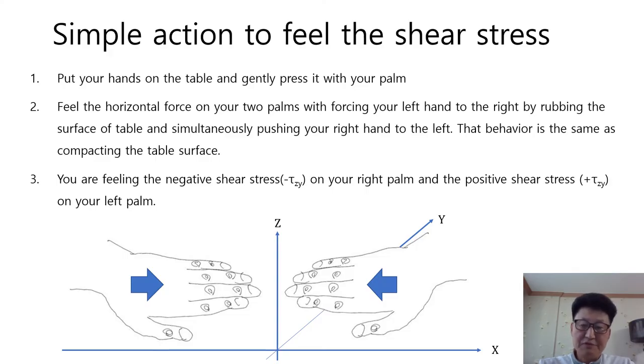I'm going to tell you the simple action to feel the shear stress. Feel the horizontal force on your two palms with forcing your left hand to the right by rubbing the surface of table and simultaneously pushing your right hand to the left. That behavior is the same as compacting the table surface. Now, you are feeling the negative shear stress on your right palm and the positive shear stress on your left palm.